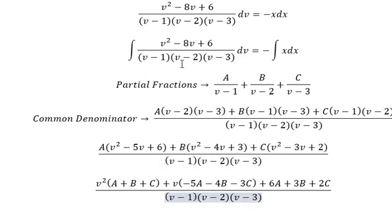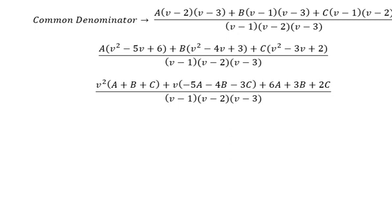Now we compare coefficient. This one you got about 1, so A plus B plus C equals to number one. This one equal to negative number eight. This one you got about number six. So we create the system of equations.